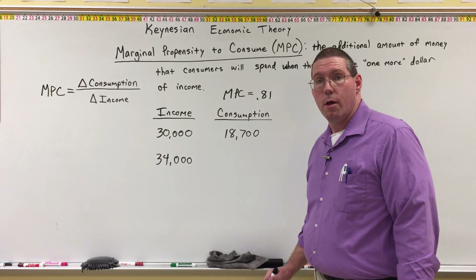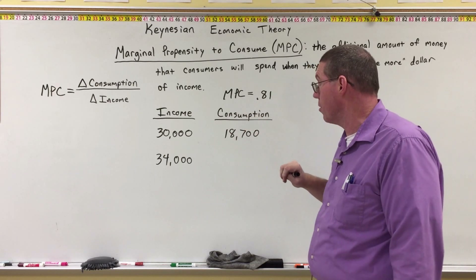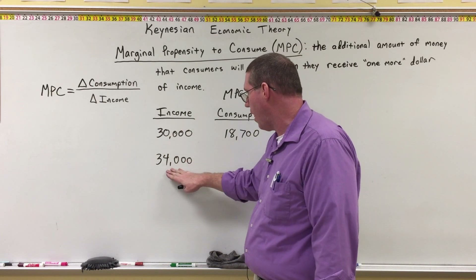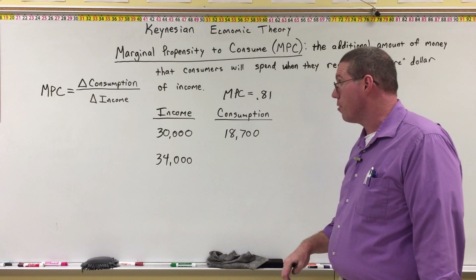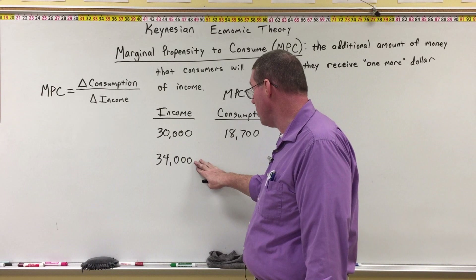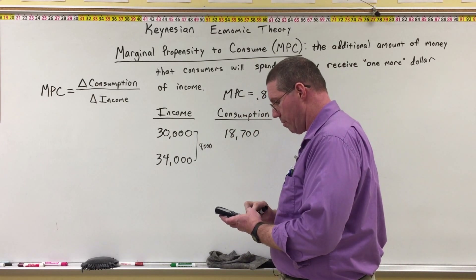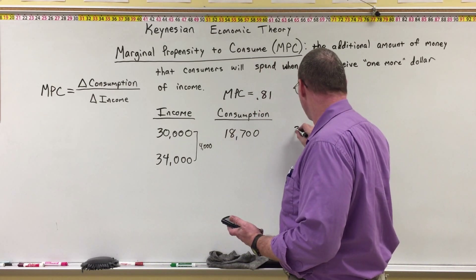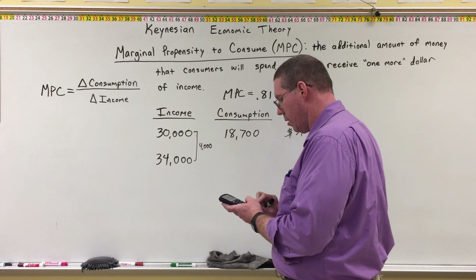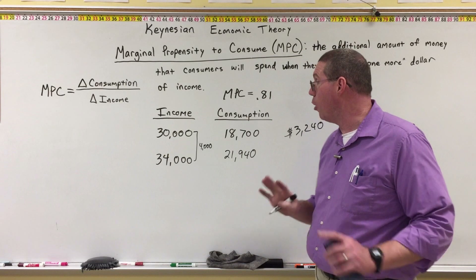Let's do just one more example. This time we won't calculate the marginal propensity to consume — we'll just say it's 0.81. When income is 30,000, consumption is 18,700. When income goes up to 34,000, we want to find the new consumption. The change in income is 4,000. Multiply 4,000 times 0.81 equals 3,240 — that's the change in consumption. Add 3,240 to 18,700 and we get 21,940. This is marginal propensity to consume — I hope you feel very comfortable with the idea and the calculations.